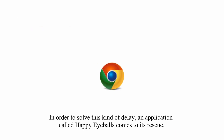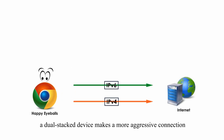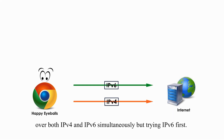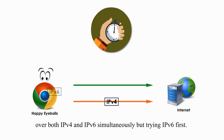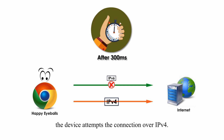In order to solve this kind of delay, an application called Happy Eyeballs comes to the rescue. With Happy Eyeballs working together with a browser, a dual-stacked device makes more aggressive connections over both IPv4 and IPv6 simultaneously, but trying IPv6 first. If the connection doesn't go through within 300 milliseconds, the device attempts the connection over IPv4, thus saving some time.